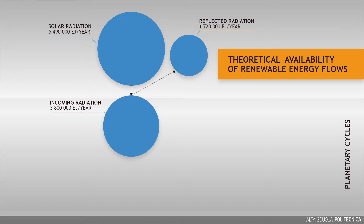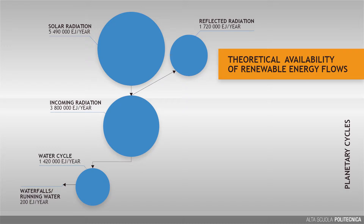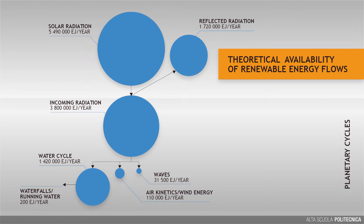This value is further reduced by atmospheric absorption. Waterfalls and running waters account for around 200 exajoules per year, a very small fraction of the energy driving the planetary water cycle. The theoretical potential for wind and wave energy flows are respectively around 110,000 exajoules and 31,000 exajoules per year. Photosynthetic processes drive biomass production at a rate of around 2,000 exajoules per year.